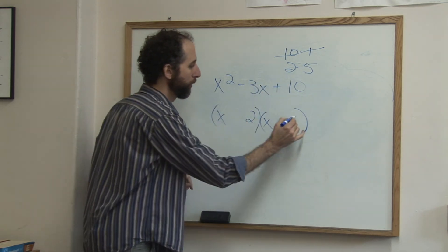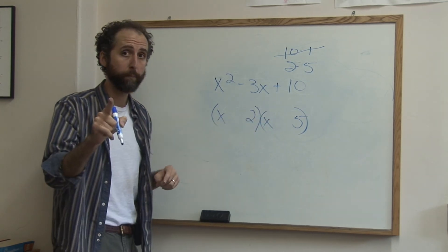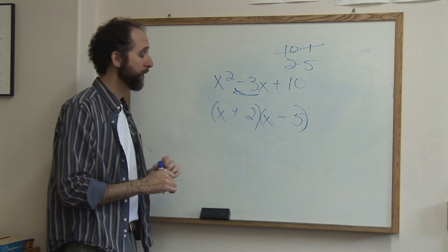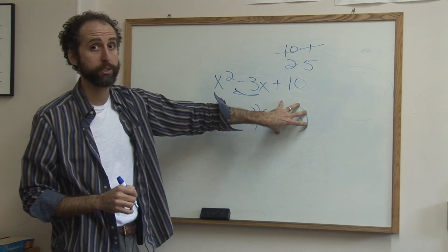So we put 2 and 5. Doing good. We've got to figure out our signs. Now here's the deal. This is a negative 3, so we need that to be negative, this to be positive. Whatever that sign is, you want the larger of the two numbers to match that sign.